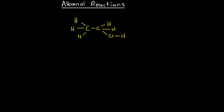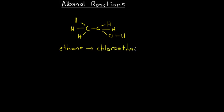Here we're going to have a look at alkanol molecules and their properties. The most common alkanol molecule is ethanol, which has one hydroxyl group on it. Ethanol is produced from ethane, which is used to produce chloroethane, and chloroethane is then used to produce ethanol. However, ethanol has very different properties to both chloroethane and ethane.